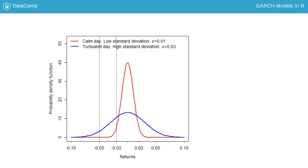You need to take those changes into account since they heavily influence the probability of losing money. The plot shows this by comparing the return distribution on a turbulent day in blue with the distribution on a calm day in red.